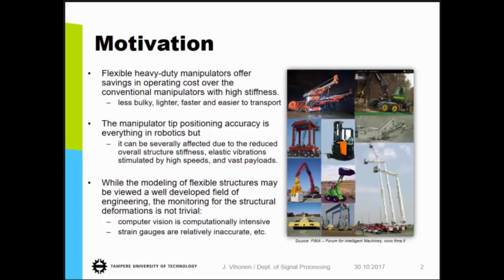A couple of examples are given at the bottom. As became evident in the previous presentation, computer vision is quite often computationally intensive, and the accuracy you get from a vision system is often also dependent on the viewing geometry. Another very popular solution to monitor for structural deformations is to use strain gauges, and in many cases they are relatively inaccurate. This is often due to the fact that you glue them onto the structure you want to monitor, and the gluing also makes them quite error-prone, in the sense that they are prone to wear and failure.